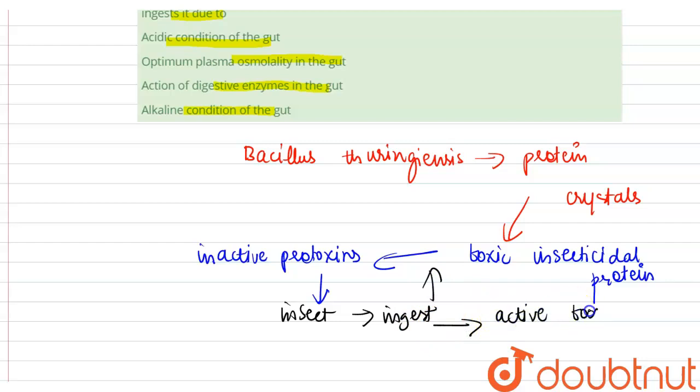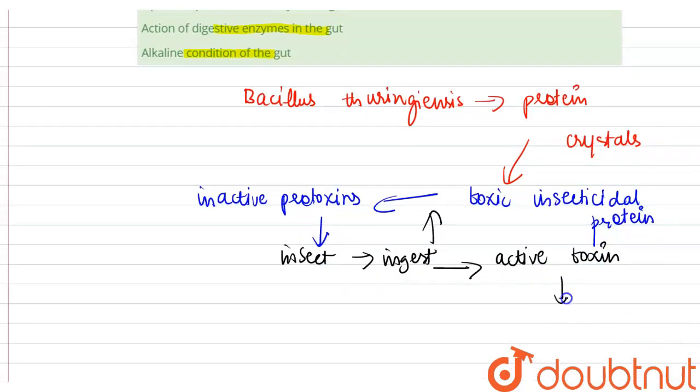Converted into active toxin, which is due to the alkaline pH of the gut, alkaline pH of the gut of bollworm, which solubilizes the crystals.